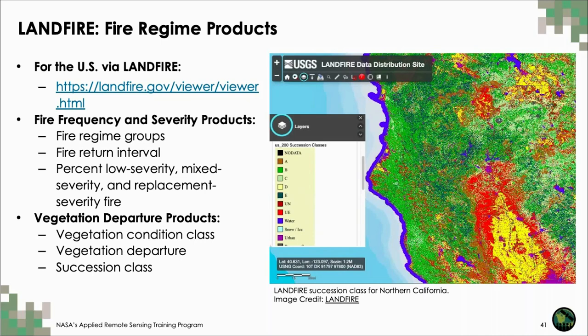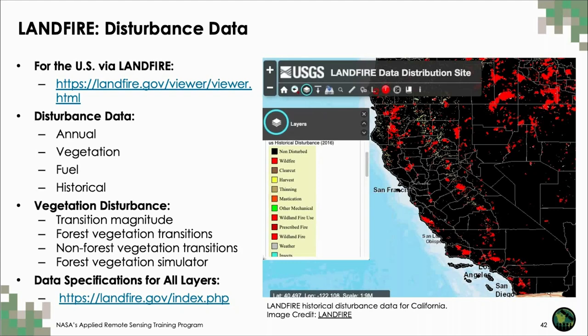LANDFIRE also has vegetation departure products, including vegetation departure, vegetation condition class, and succession class. Here we have a screenshot displaying succession class for Northern California, which can be helpful in understanding vegetation composition and successional stage within your study area. LANDFIRE also includes useful disturbance maps, available annually and historically, including transition magnitude, forest and non-forest vegetation transitions, and forest vegetation simulations. It's important to note that the extent of LANDFIRE is limited to the United States.